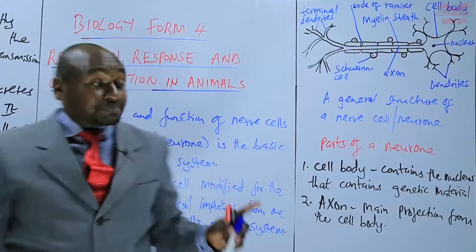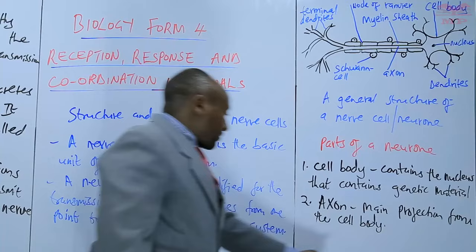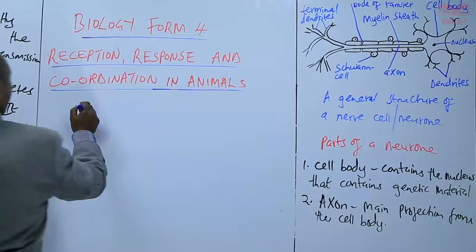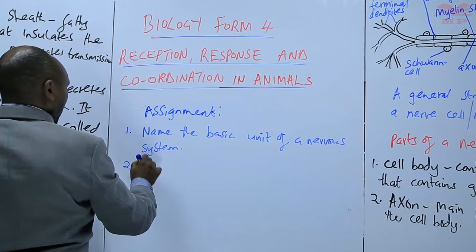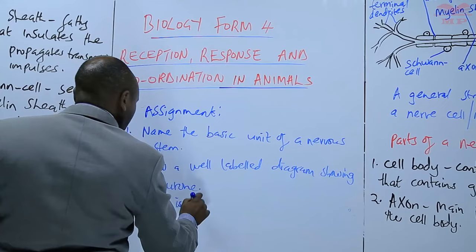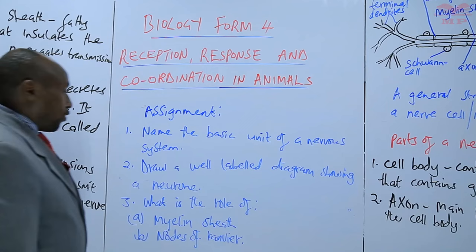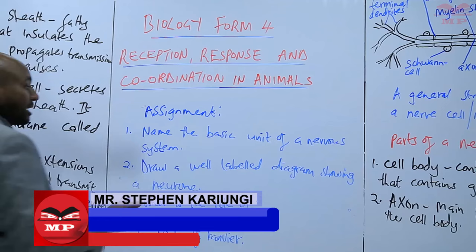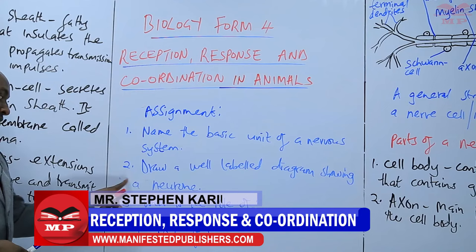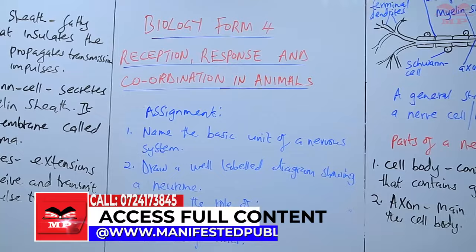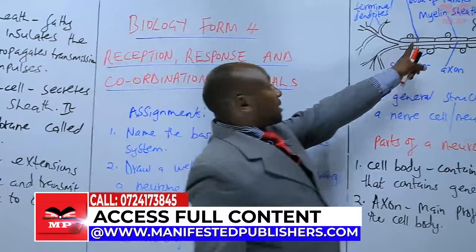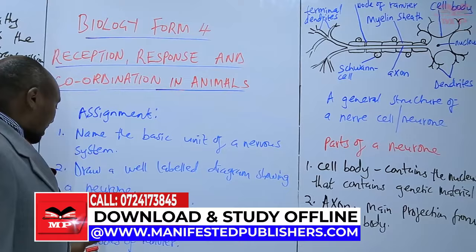That is the structure and function of the nerve cell. We are going to have an assignment on the same. There are three questions. First, name the basic unit of a nervous system. Second, draw a well-labeled diagram showing a neuron or a nerve cell. Third, what is the role of: A, the myelin sheath; and B, the nodes of Ranvier?